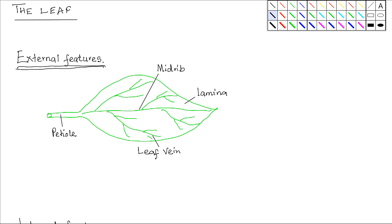Looking at the external features of a leaf, there are characteristics that enhance the process of photosynthesis. The first one is the color. Most plants have green leaves. The greenness is due to the presence of the pigment chlorophyll. Chlorophyll enables the plant to trap light energy, which is then used in the process of photosynthesis.